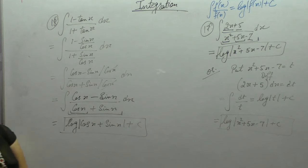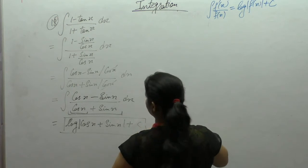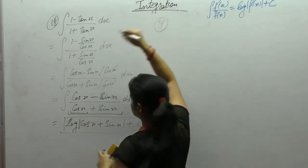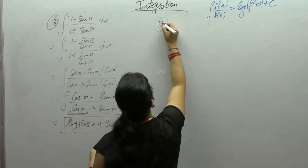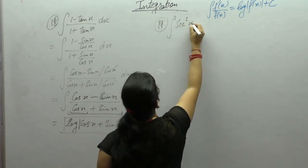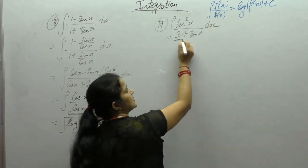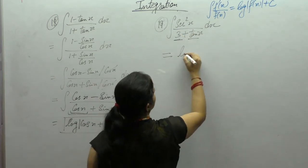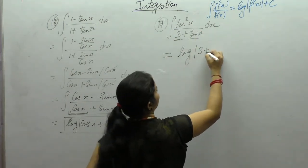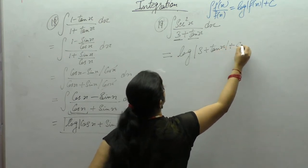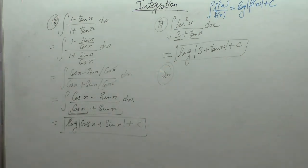Next question: integral of sec²x / (3 + tanx) dx. Derivative of 3 is 0 and derivative of tanx is sec²x. So we can directly apply the formula f'(x)/f(x) = log|f(x)| to get log|3 + tanx| + C.